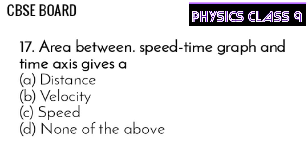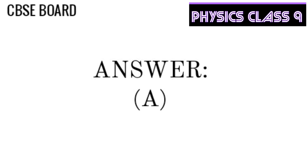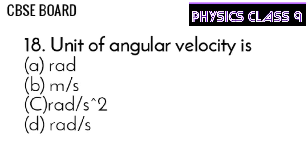Question 17: The area between a speed-time graph and the time axis gives distance, velocity, speed, or none of these. The answer is A — it gives distance.